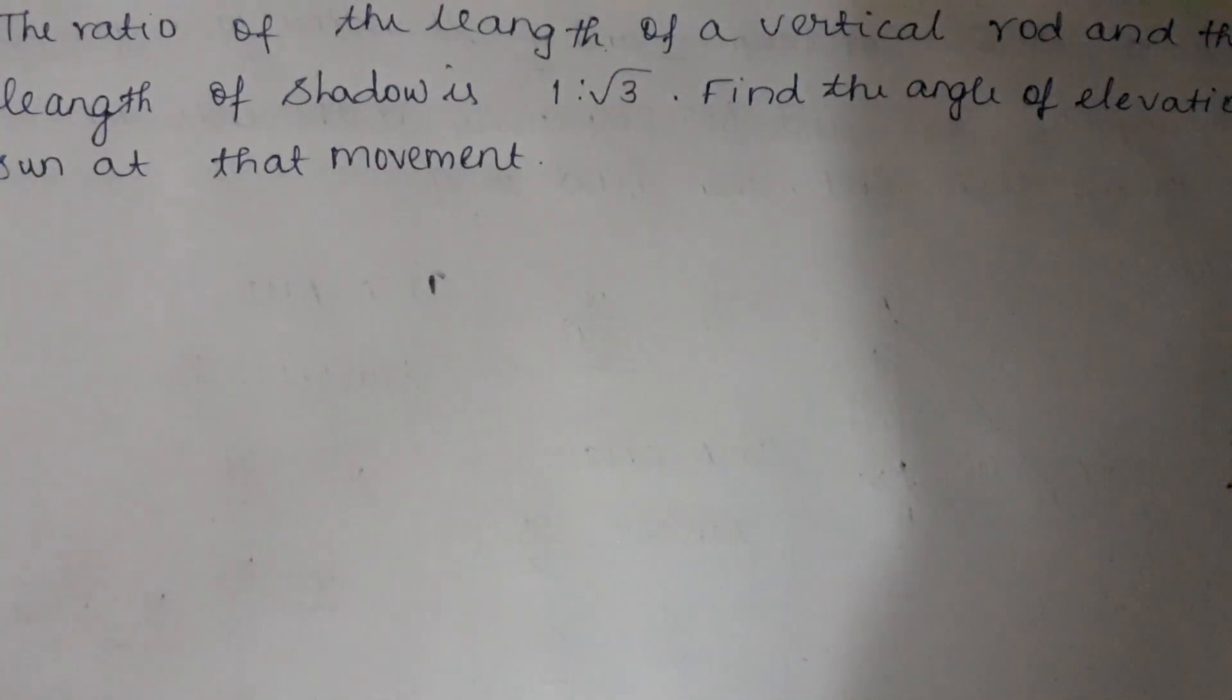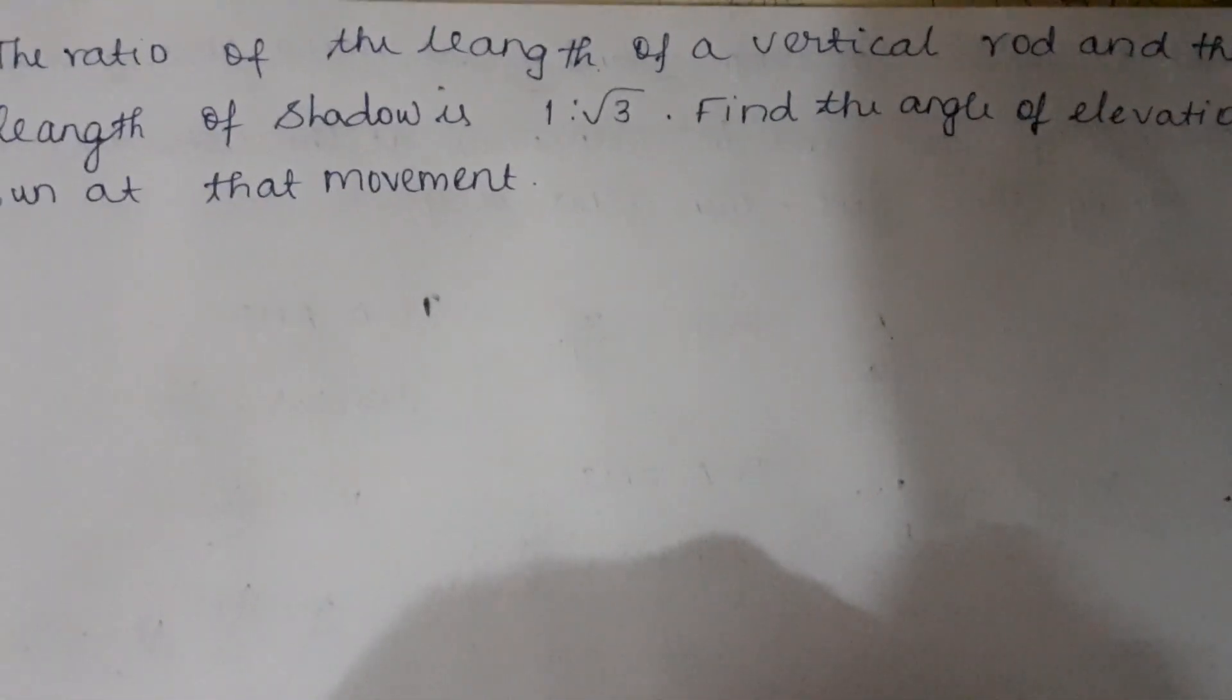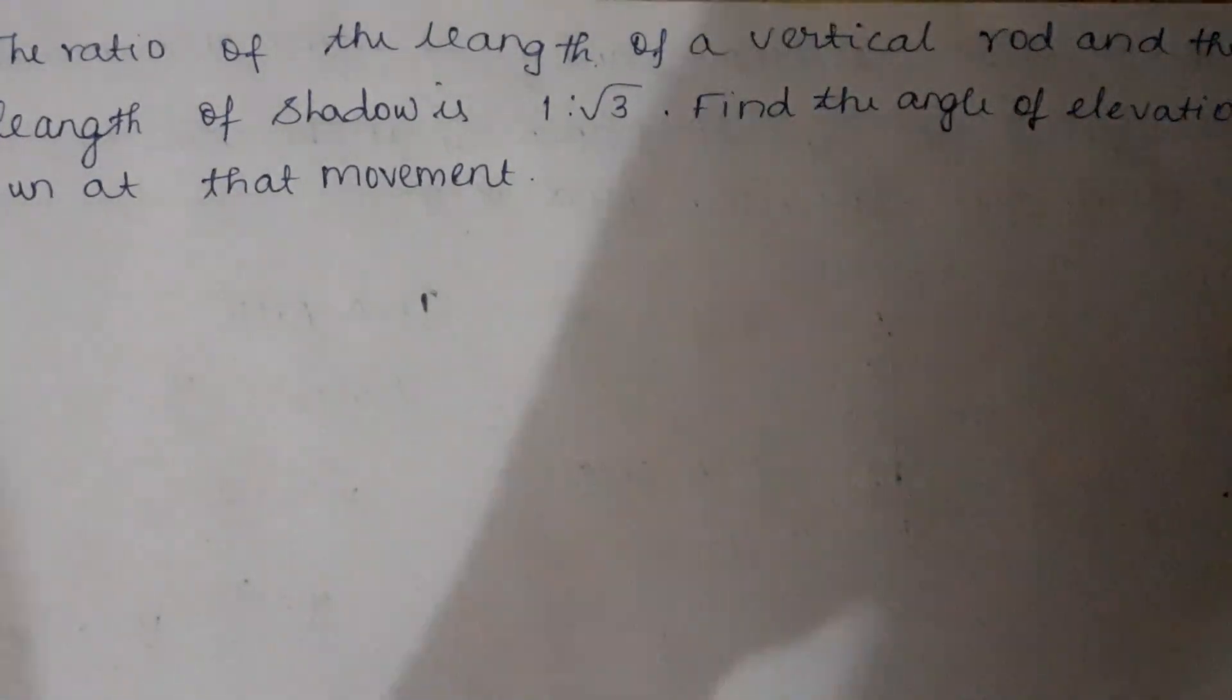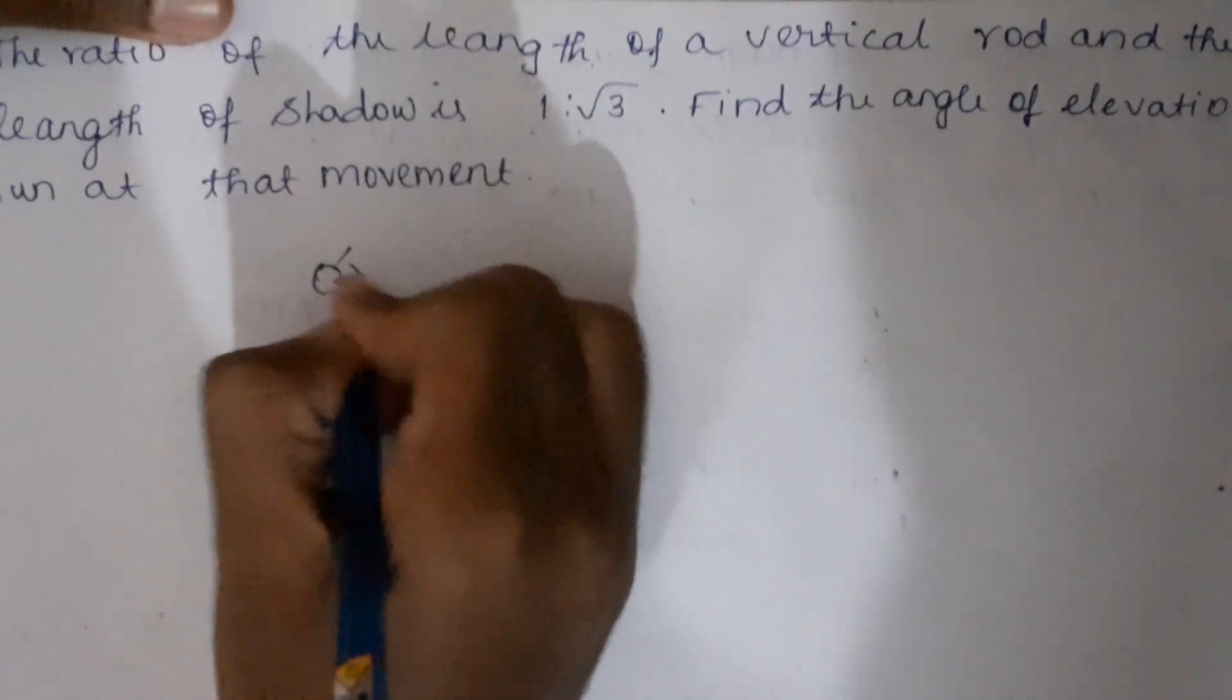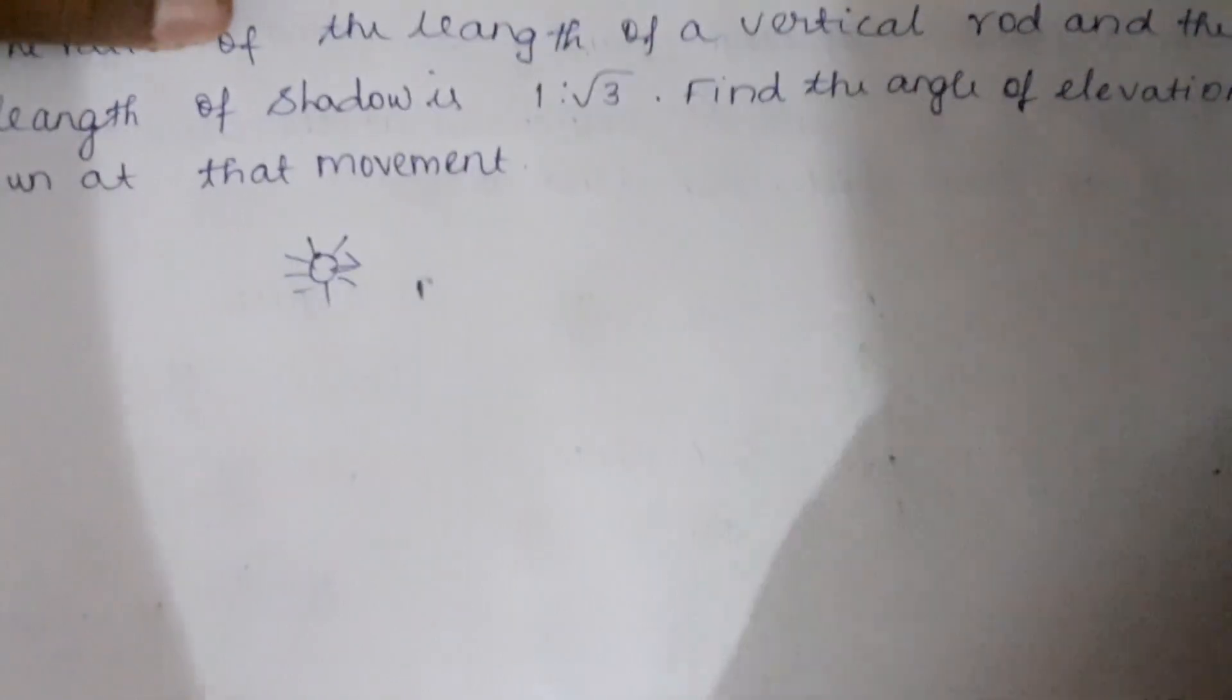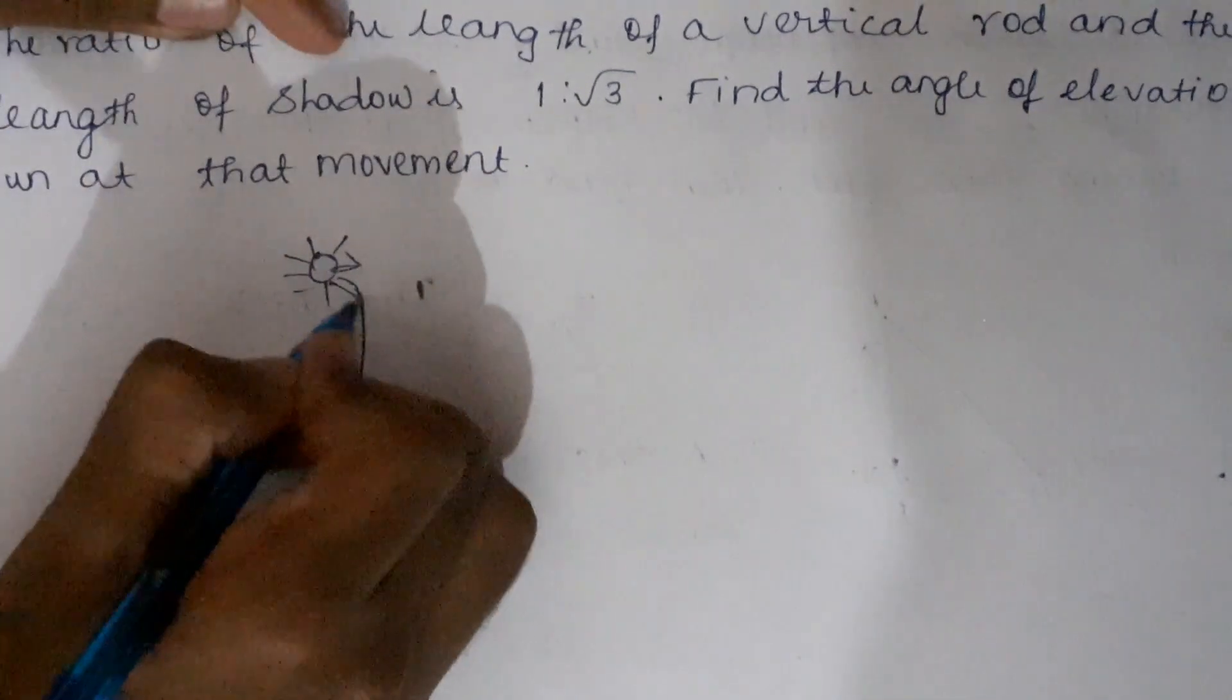The ratio of the length of the vertical rod and the length of the shadow is 1 is to root 3. Find the angle of elevation of the sun at that moment. Let us imagine this is the sun, okay? So there is a sun and a vertical pole over here.